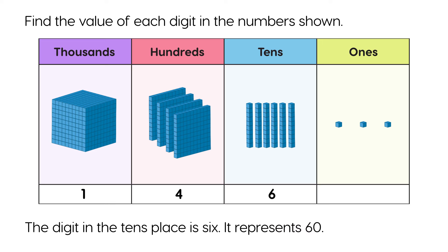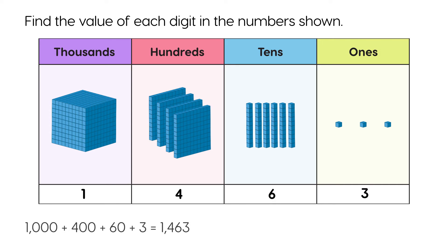The digit in the tens place is 6. It represents 60. The digit in the ones place is 3. It represents 3. 1000 plus 400 plus 60 plus 3 equals 1463.